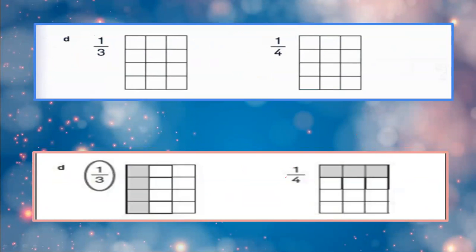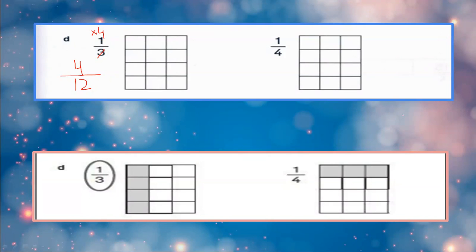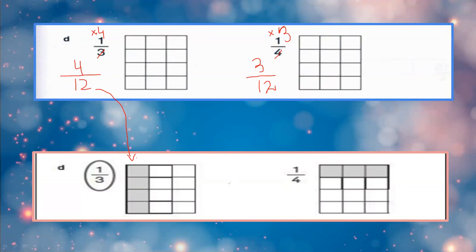Now we are solving the D part. Both grids have 12 boxes. For 1 upon 3: to convert 3 into 12 I multiply by 4 on both sides, giving 4 upon 12. For the other fraction, converting 4 into 12 I multiply by 3, so the numerator becomes 3, giving 3 upon 12. I color 4 boxes for the first grid and 3 boxes for the second grid.